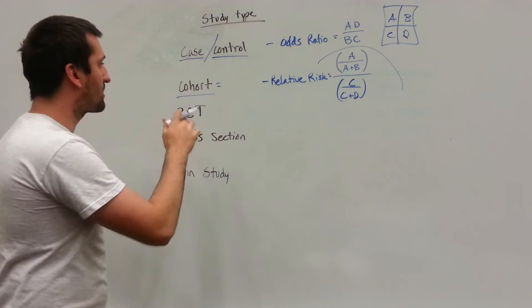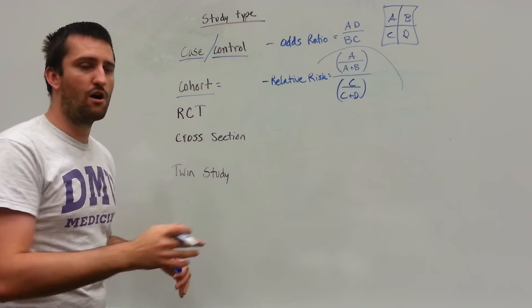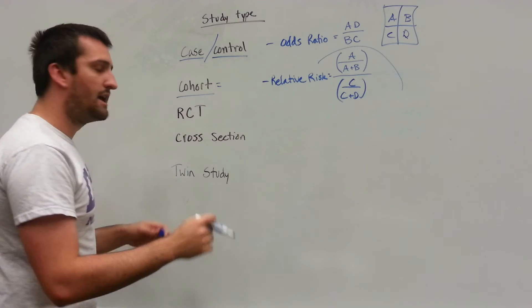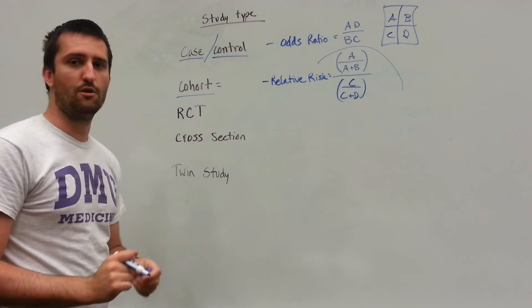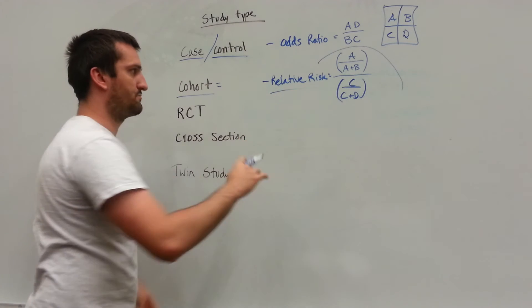So for here, we know that they actually have a case and we're going to have a control. For a cohort study, we're going to take an exposure. So radiation, a new drug, whatever it is, and we're going to compare it to a group that did not have that exposure to radiation or a new drug, whatever you want to use. That's where we're going to use relative risk.